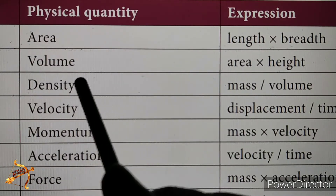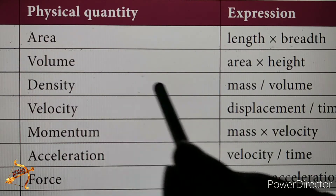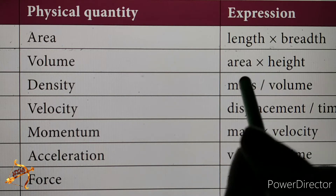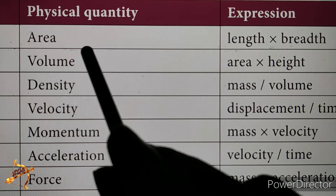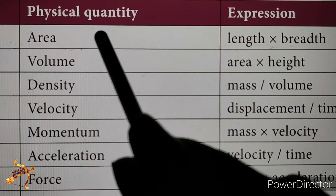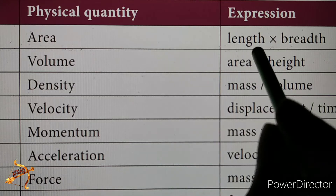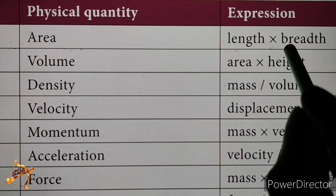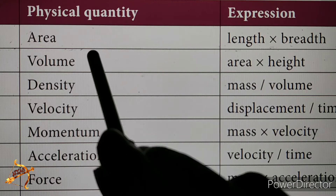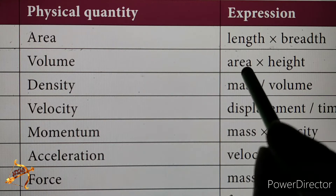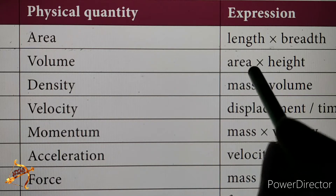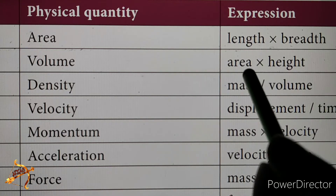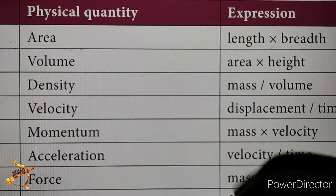Volume is area multiplied by height. Area is the derived quantity obtained from length times breadth. Height is measured in meters. So volume is derived from the fundamental quantity of length.